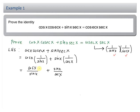Next we put into common denominator. The first term we multiply with cos x at both denominator and numerator and the second term we multiply with sin x at both denominator and numerator.